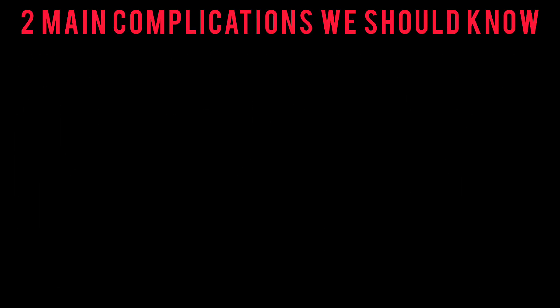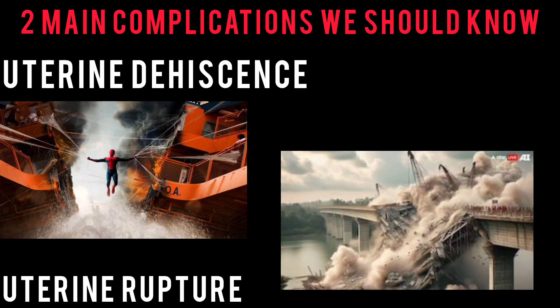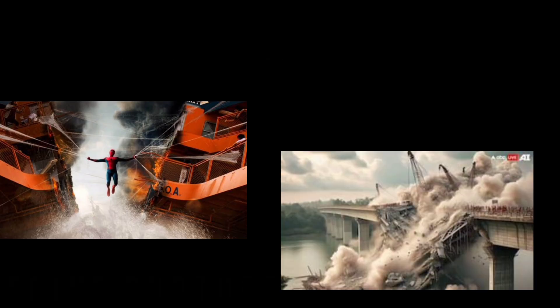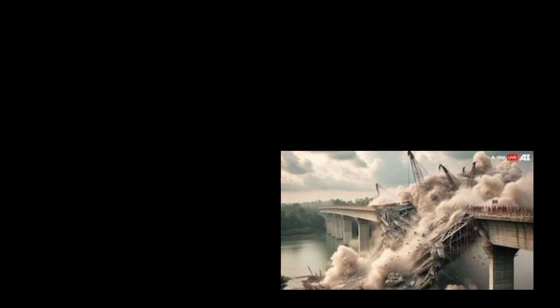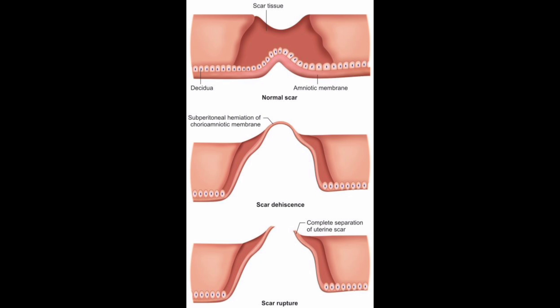The question raised was: what are the complications that can arise for women undergoing a TOLAC? There are two main ones — uterine dehiscence and uterine rupture. Looking at uterine dehiscence first, it is an incomplete uterine scar separation. The scar is not completely disrupted, and the visceral peritoneum remains intact. It can sometimes go unrecognized when the uterine scar is not explored after a vaginal delivery.